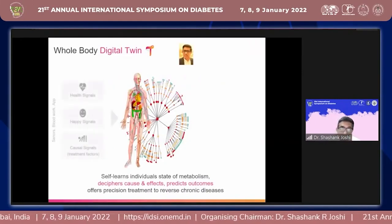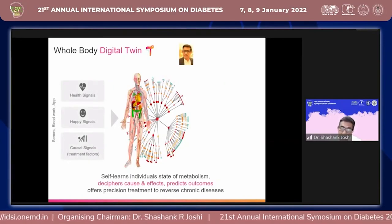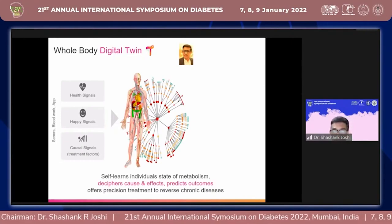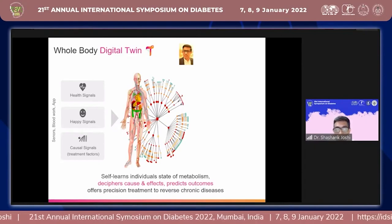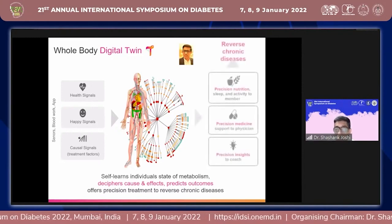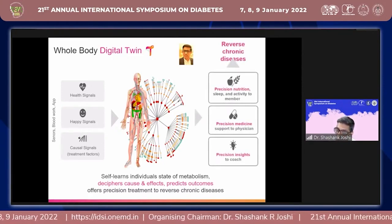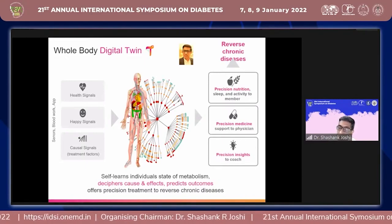What does technology do? We now have CGM available, so we can pick up signals — happy signals and causal signals — and learn about every human being. Because every person reacts differently; I might have mithai and Dr. Bansi, Dr. Paramesh, and Dr. Takshata will all react differently to the same food. So it's all about precision nutrition, appropriate sleep, appropriate activity, precision medicine, and precision insights.